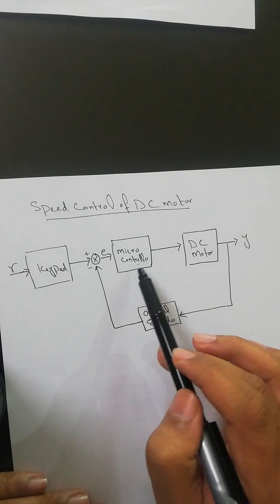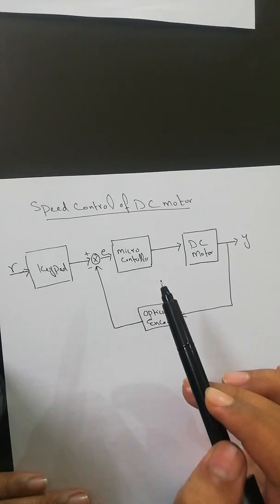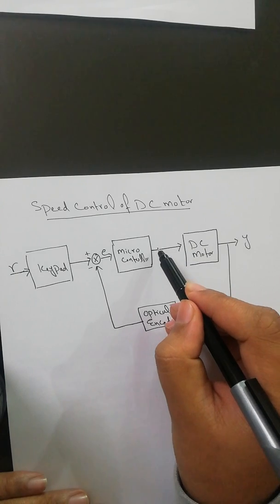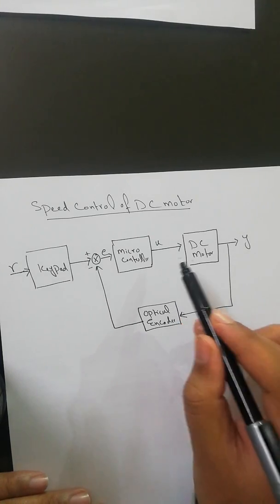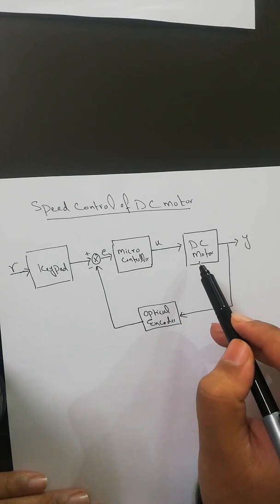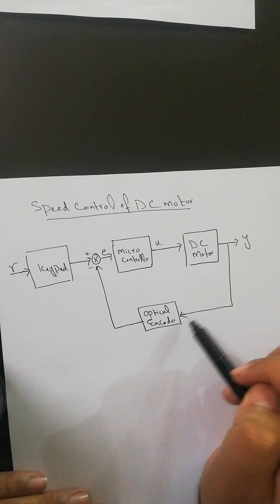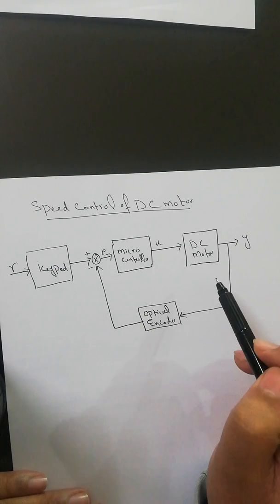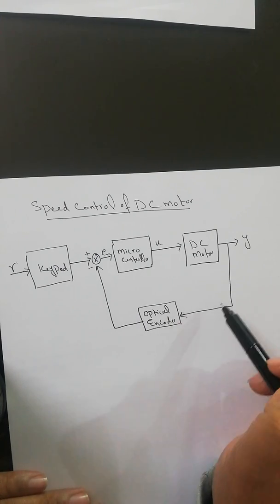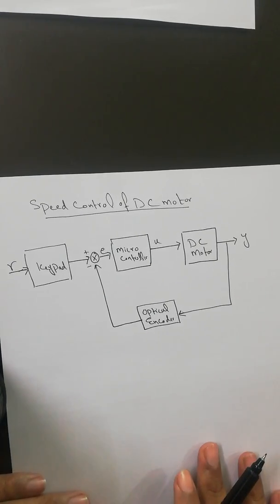Then the controller section comes in. I have mentioned a microcontroller — meaning I am using a digital circuit, a microcontroller, and doing some programming on it. It will give the commanded signal U, which in this case will be the pulse width modulation. Next is the plant, that is the DC motor. This is the output — the speed of the motor. This actual speed is given back to the input for comparison through the output sensor, which in this case is an optical encoder.